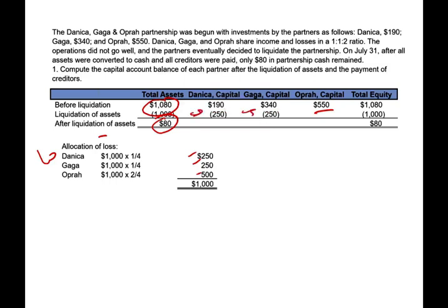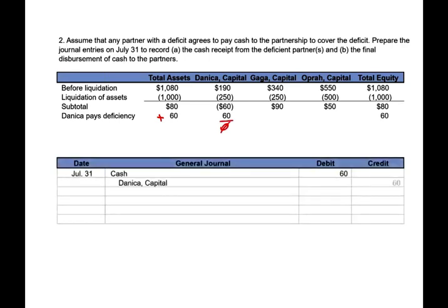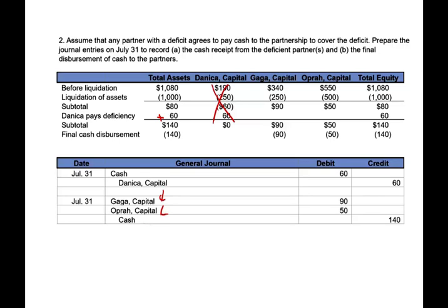After absorbing the losses, D (Nika) has a capital deficiency of negative $60, G (Gaga) still has $90, and O (Opera) still has a credit balance of $50. In the first scenario, we assume D can pay the deficiency. D pays the partnership $60 in cash — debit cash, credit D's capital — increasing D's balance to zero. Now we have $140 in cash. We distribute the $140 — $90 to Gaga and $50 to Opera — debiting their capital balances and crediting cash to close the partnership. In this scenario the person with the deficit was willing and able to pay.